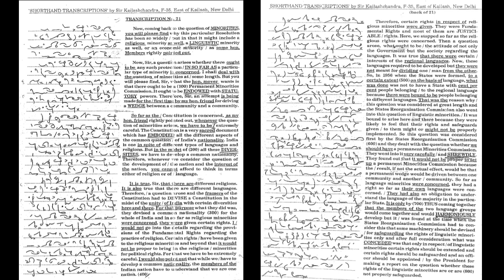They went into it very carefully and shrewdly. They found out that it would not be proper to set up a permanent minorities commission because the result, if not the actual effect, would be that a permanent wedge would be driven between one community and another community.